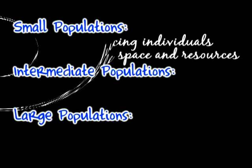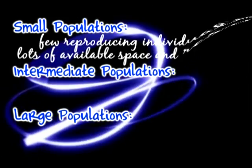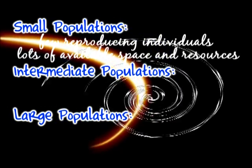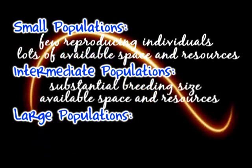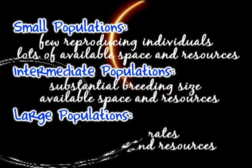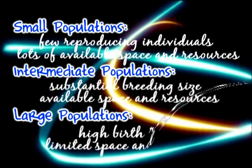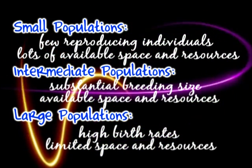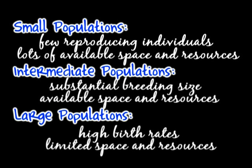Intermediate populations tend to have the greatest population growth rate because of the balance between per capita rate and increase in population size. Since the per capita rate remains relatively high and there are many more reproducing individuals than in smaller populations, its population growth will always be greater. Although larger populations have many reproducing individuals, the overwhelming numbers limit resources per individual.